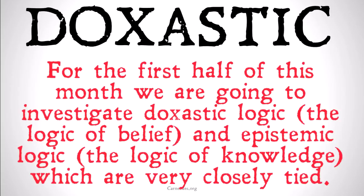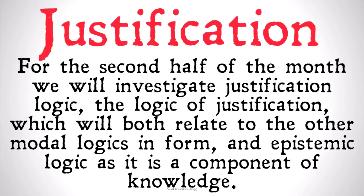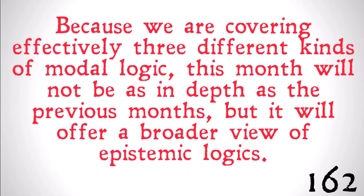How are we going to do this exactly? For the first half of the month, we're going to investigate both doxastic logic, the logic of belief, and epistemic logic, the logic of knowledge, because both of these are going to be very closely tied — a lot of the axioms are going to apply in similar ways. Then, for the second half of the month, we're going to investigate justification logic, or the logic of justification, which relates to our other modal logics in form, as they all share very similar axioms, but also relates to epistemic logic, since justification is a necessary component of knowledge for most people. Because we're covering effectively three different kinds of modal logic, this month will not be as in-depth as the previous months, but it will offer a broader view of epistemic logics.